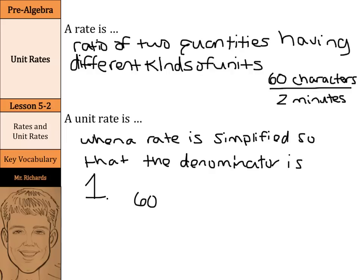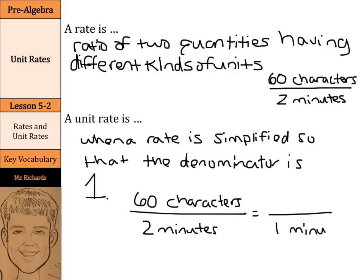And if we take that 60 characters in two minutes and try to make this into a unit rate, our denominator needs to be one minute. Well, ask yourself, how can I get from two minutes to one minute? Well, you can divide by 2. But as when we simplify fractions, if you divide the bottom by 2, you also have to divide the top by 2. So this gets us 30 characters in one minute. And that's a unit rate.